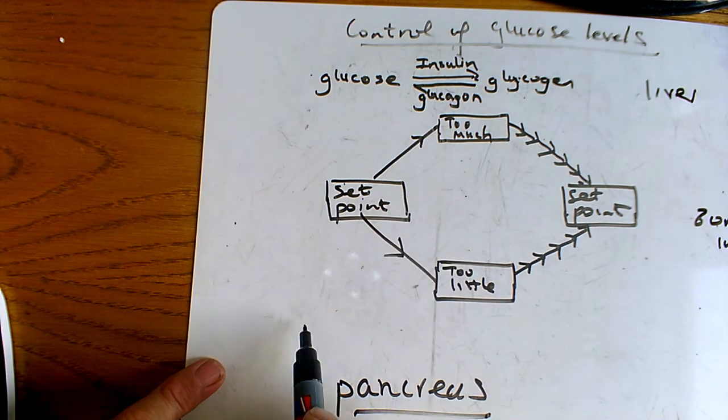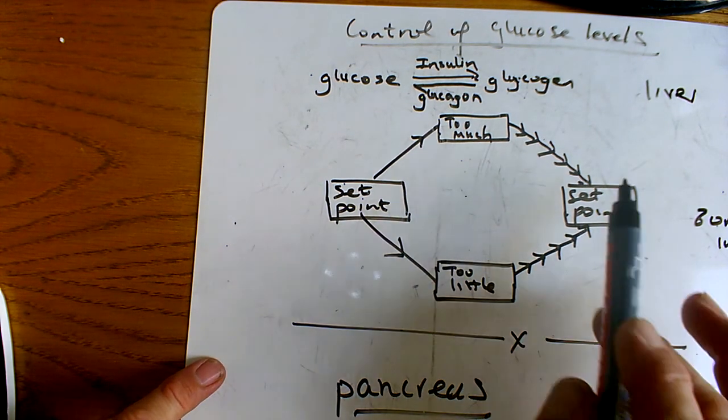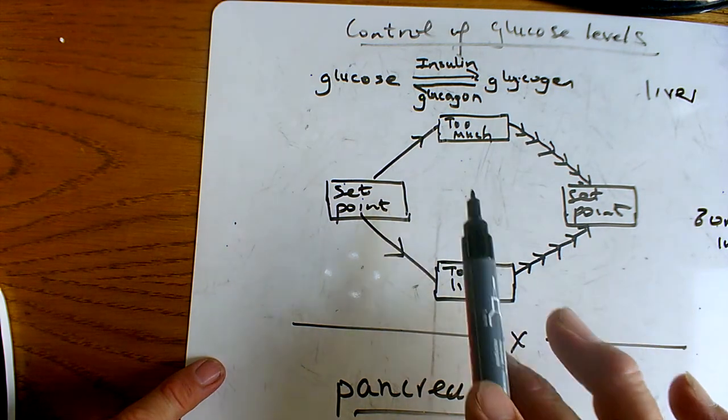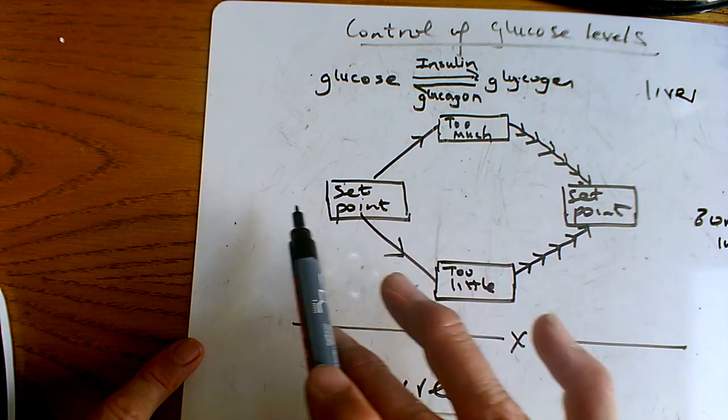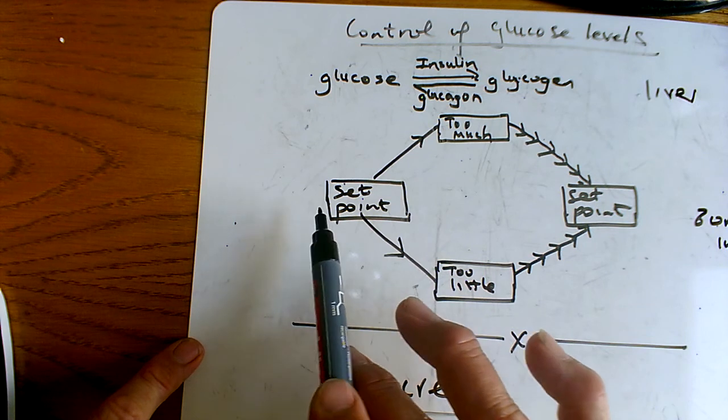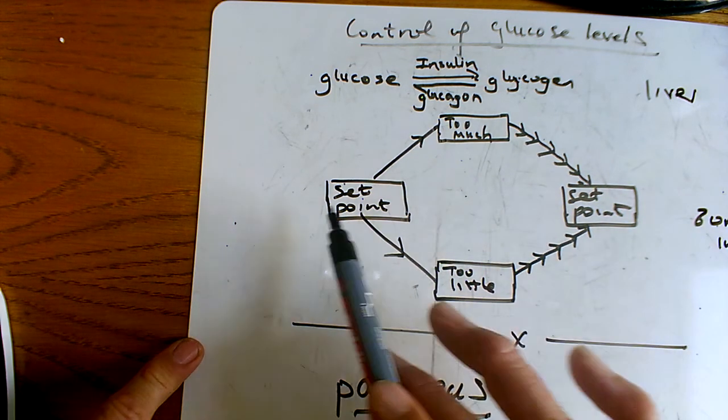Okay, that's basically it everybody. It's a really good example of negative feedback and in order to create and maintain a set level of something, which is, as I just said before, homeostasis.